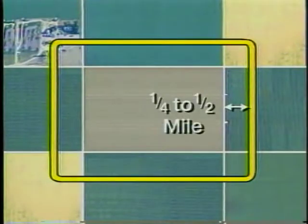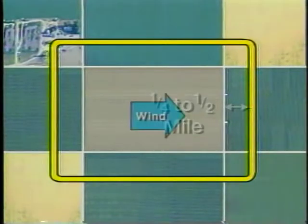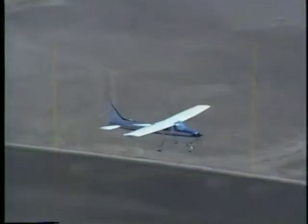The objective is to maintain an equal distance from the boundary throughout the maneuver. This distance should be about one-quarter to one-half mile. Ideally, one leg of the pattern should be directly downwind, allowing you to fly one segment with the wind, another directly into the wind, and two legs with a crosswind.